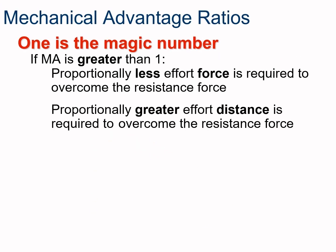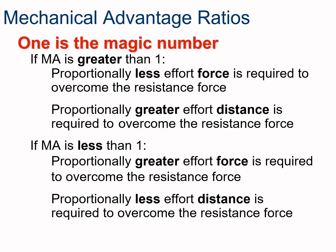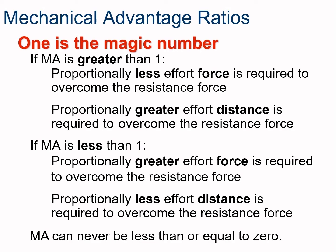One is the magic number when it comes to mechanical advantage. If the mechanical advantage is greater than 1, we don't have to put in as much force, but the trade-off is greater distance. Less than 1 means you need more force but less distance — useful in designs where you want a lot of force over a short distance. Mechanical advantage cannot be equal to or less than zero.